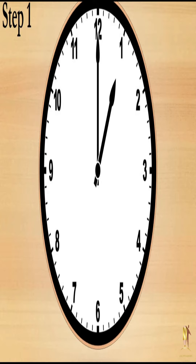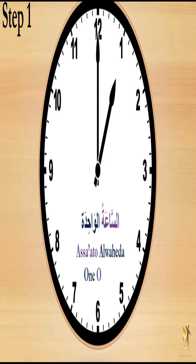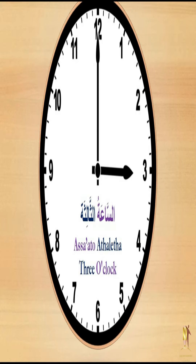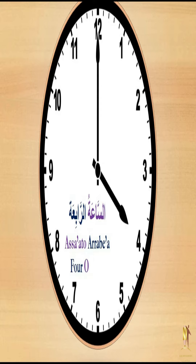How to say from 1 to 12 o'clock. First one: الساعة الواحدة — 1 o'clock. الساعة الثانية — 2 o'clock. الساعة الثالثة — 3 o'clock. الساعة الرابعة — 4 o'clock.